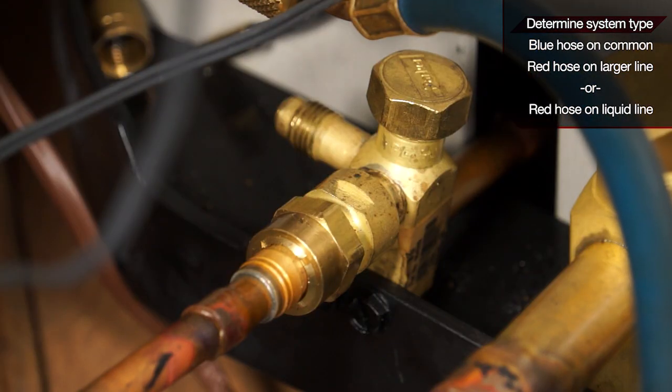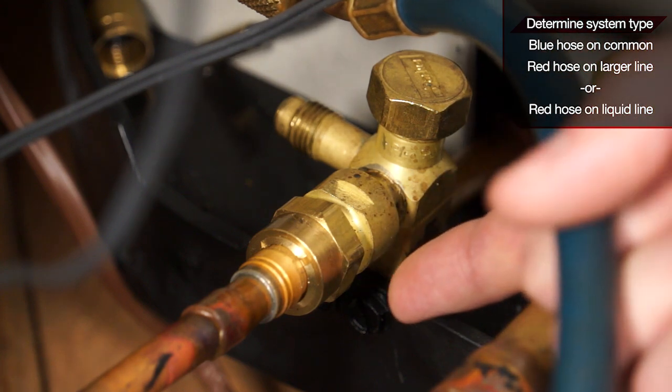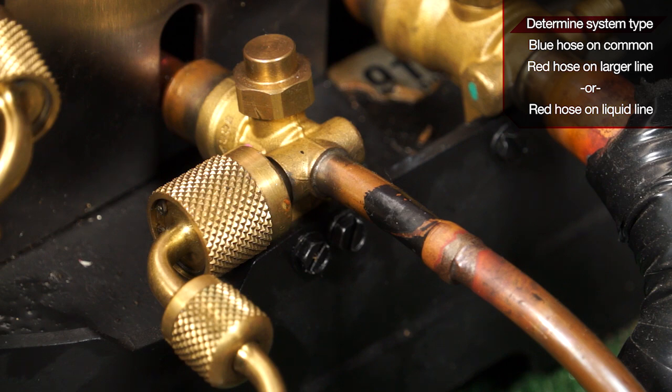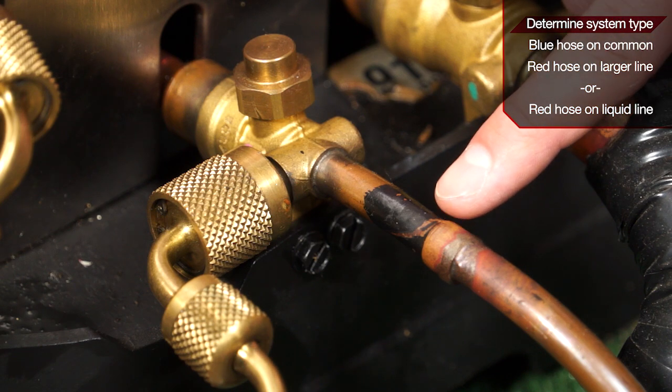First, determine if your system has a piston or a TXV. A piston driven system will have a threaded liquid line service port. With the TXV driven system, you'll have a brazen connection right at your liquid line service port.